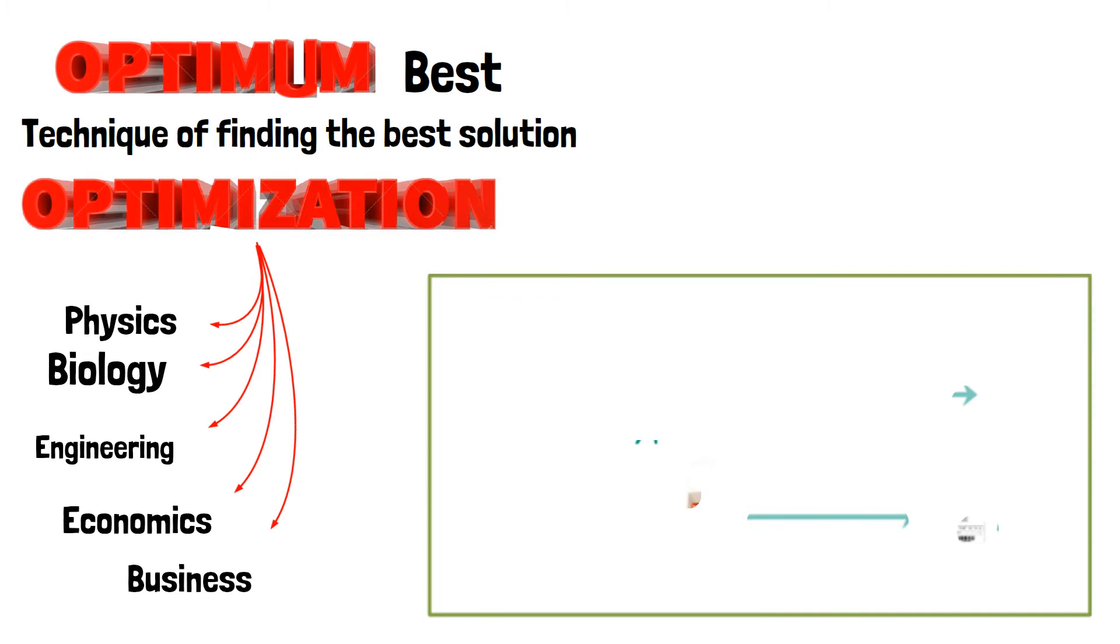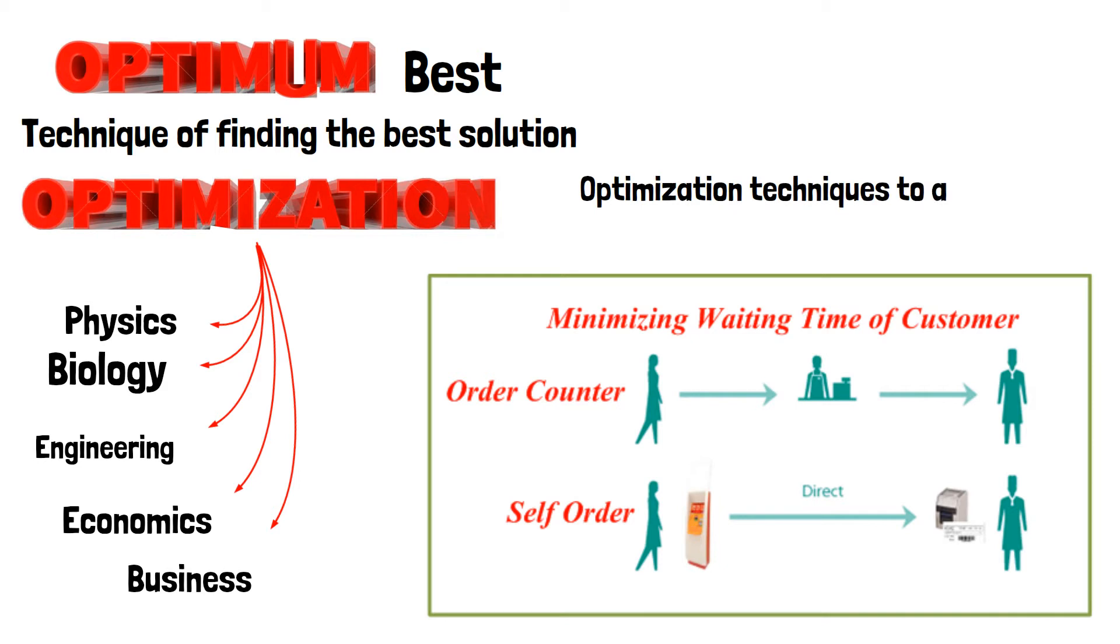For example, optimization technique is used to minimize the waiting time for customers. Users use the optimization techniques to arrive at concrete and right logical decisions. What is Equilibrium Optimizer?